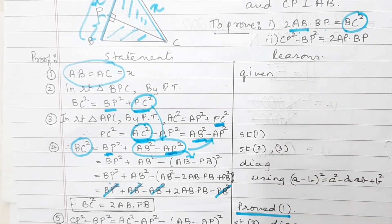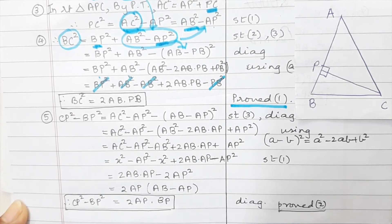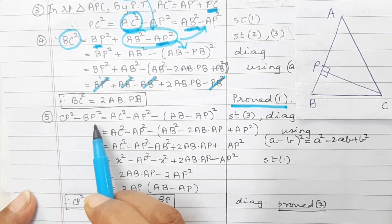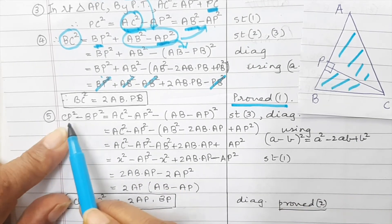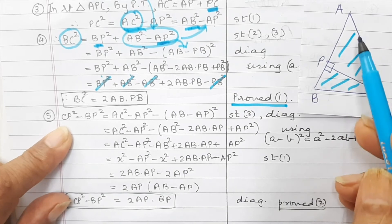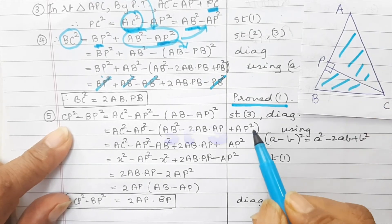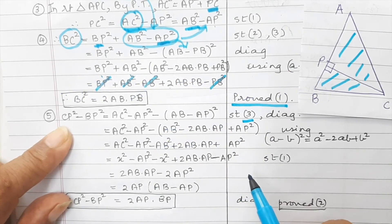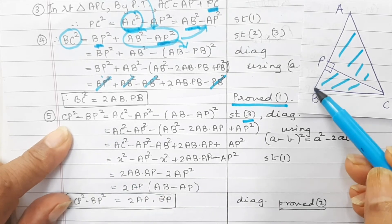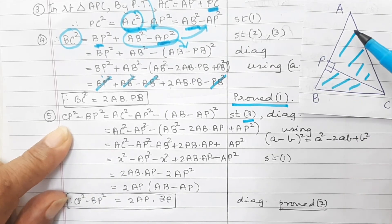Now for the second part, we are expected to prove that CP square minus BP square is equal to 2 AP into BP. We write it as given — we can't see the diagram here easily, so we keep a copy of the diagram handy. Now, what is CP square? CP square in terms of AP comes from the triangle APC, so CP square equals AC square minus AP square, which is what we already found in statement number 3. We have BP here, but in our required result we need AP and only BP, not BP square.